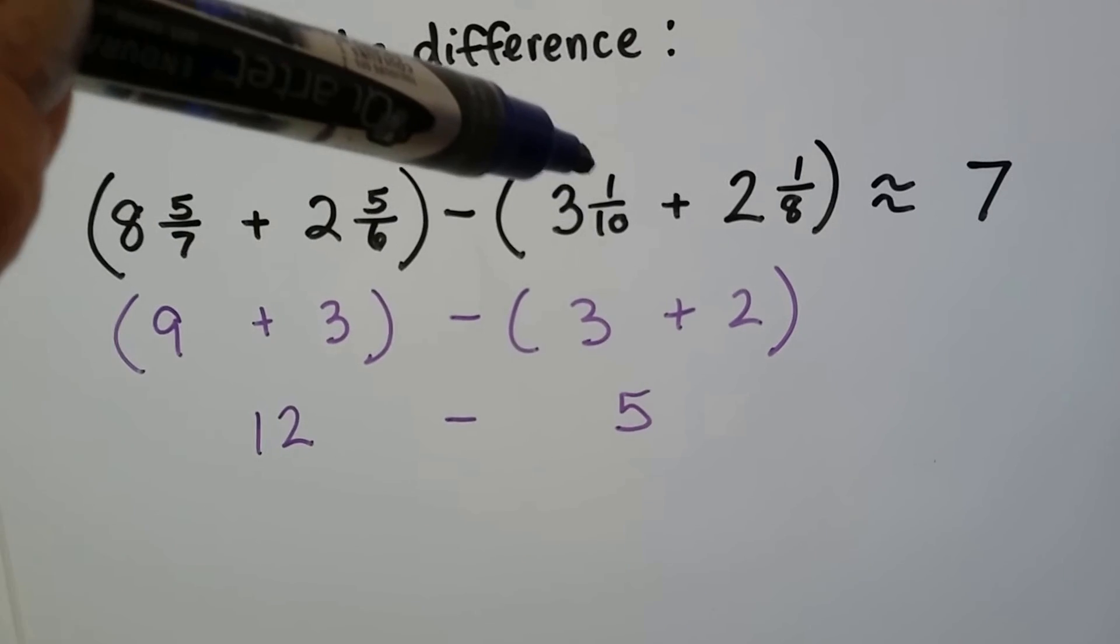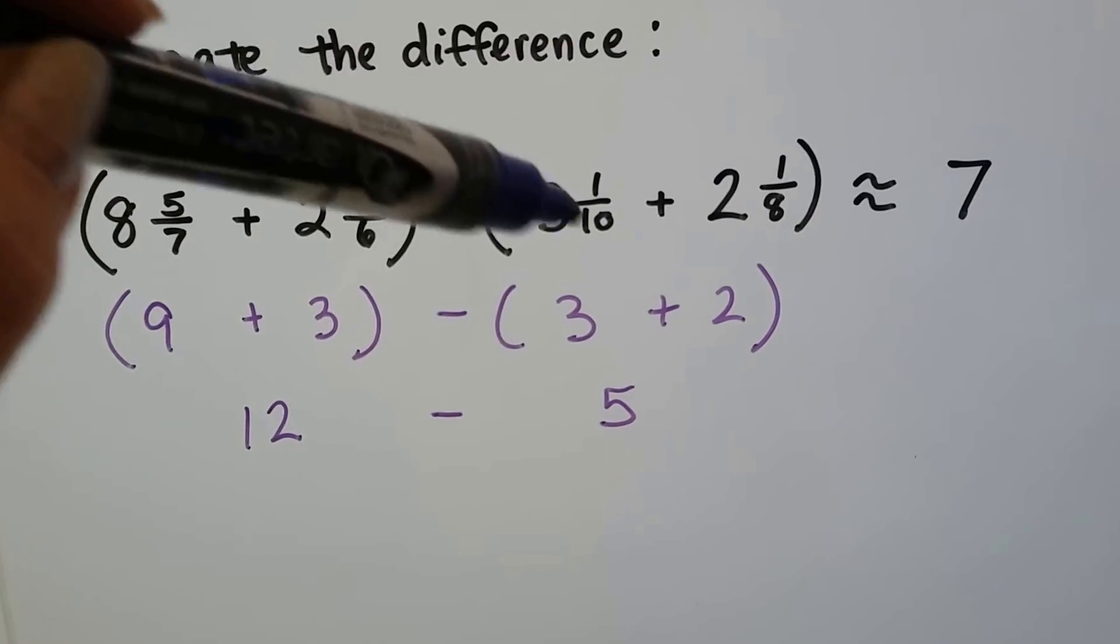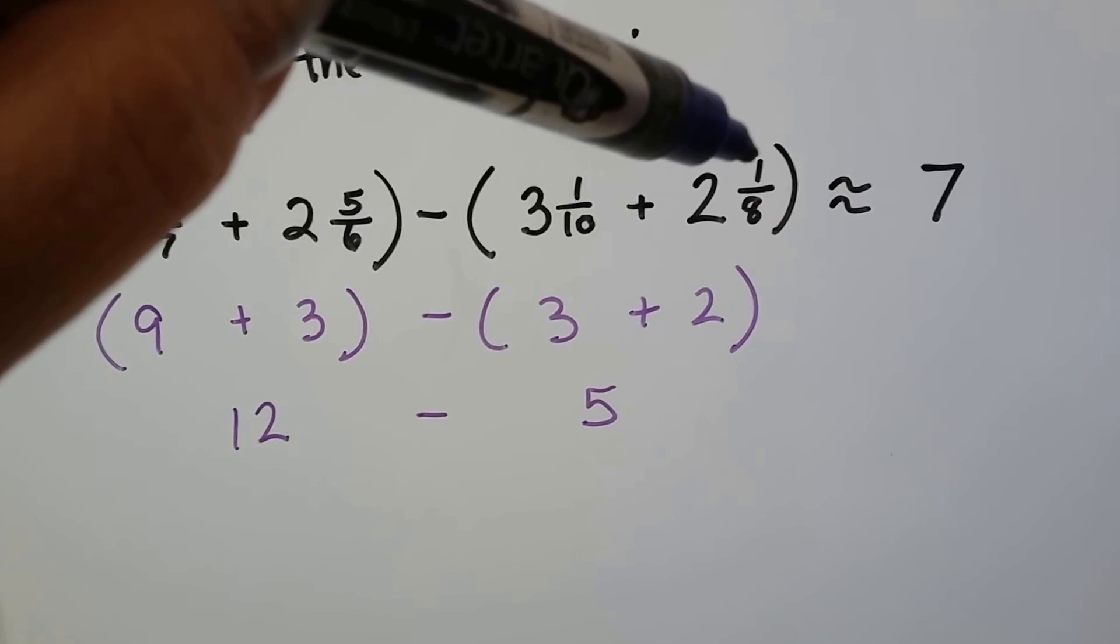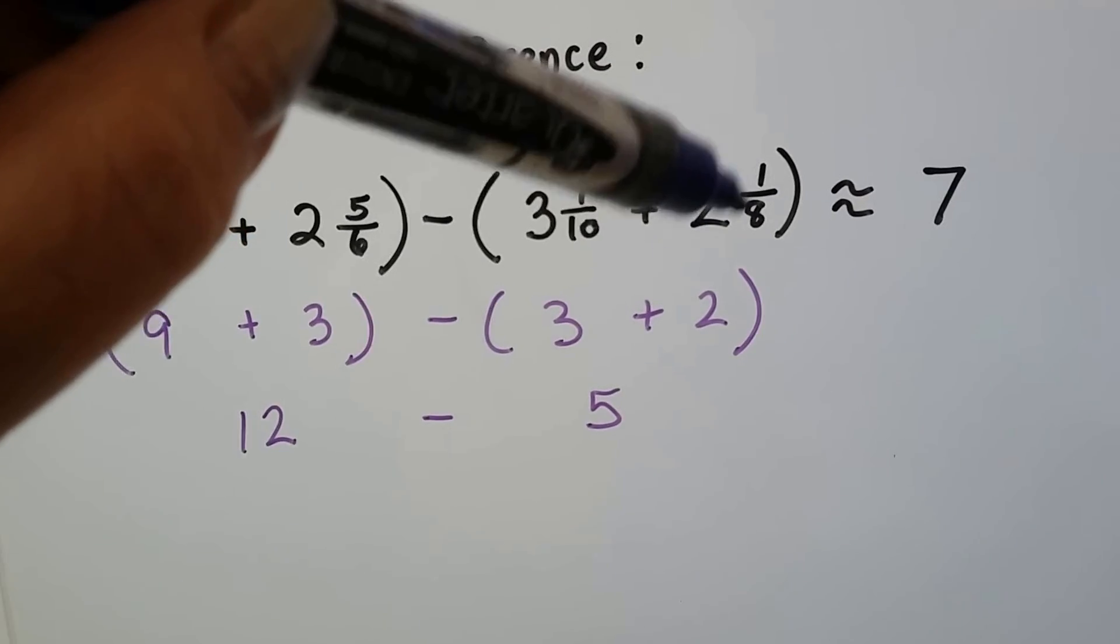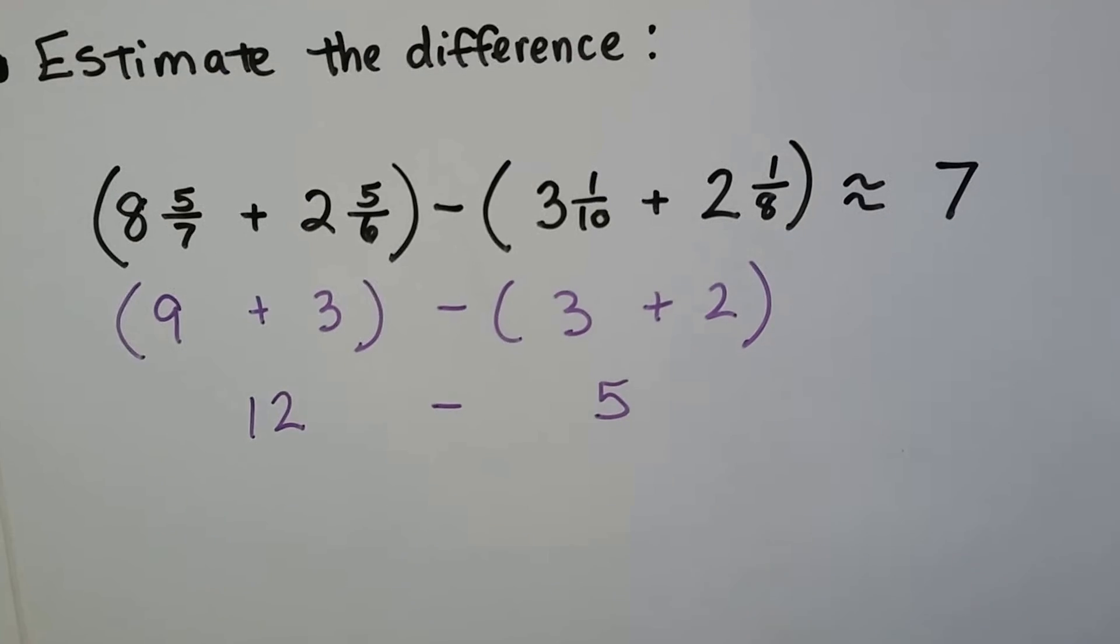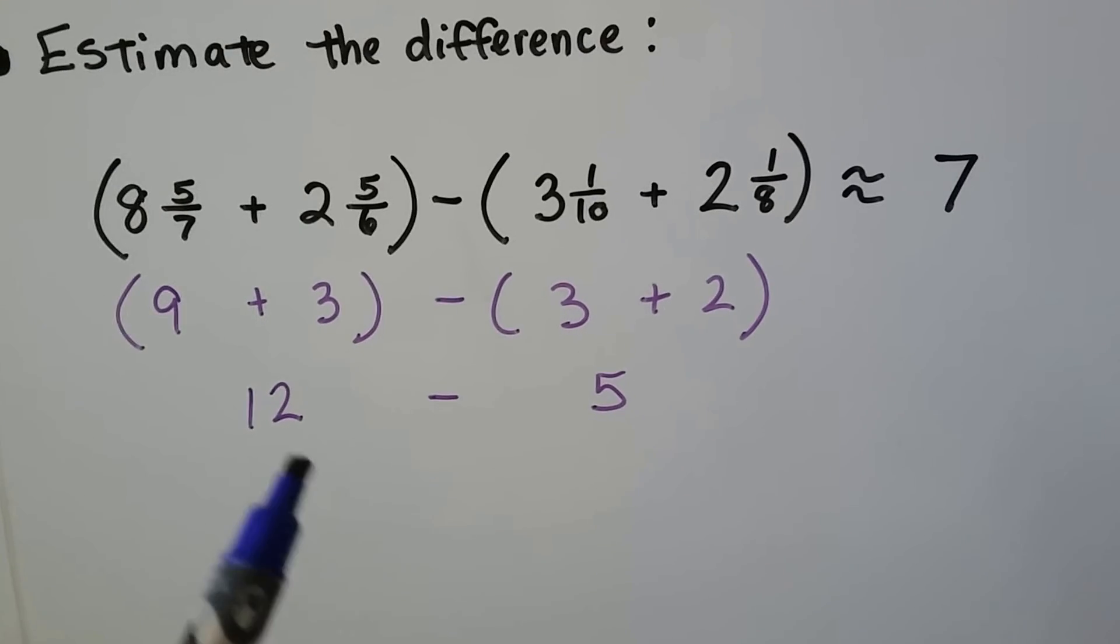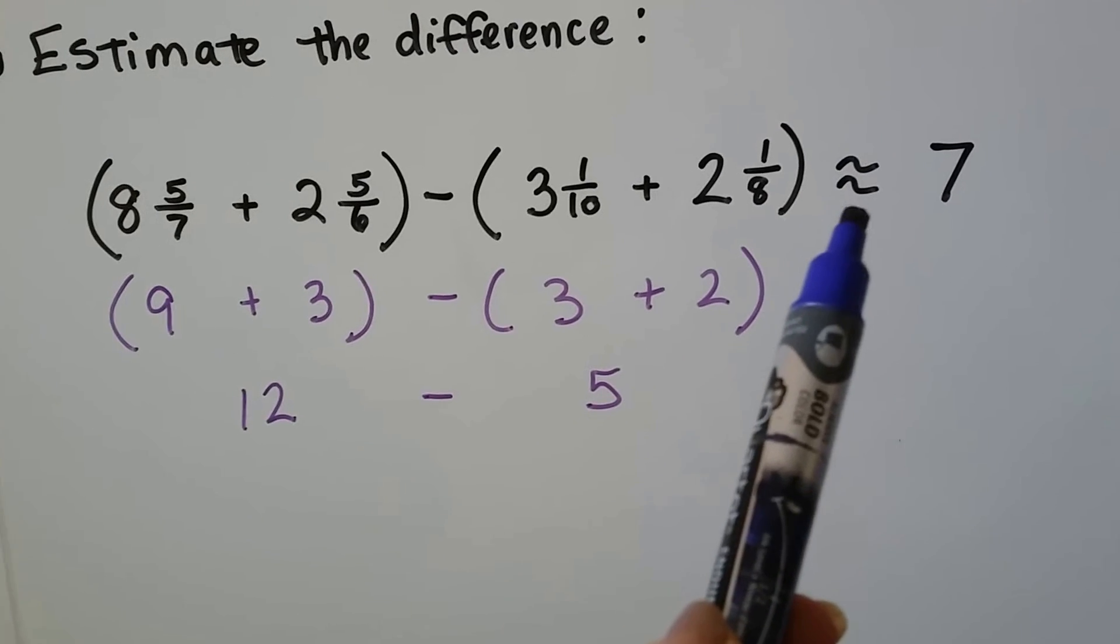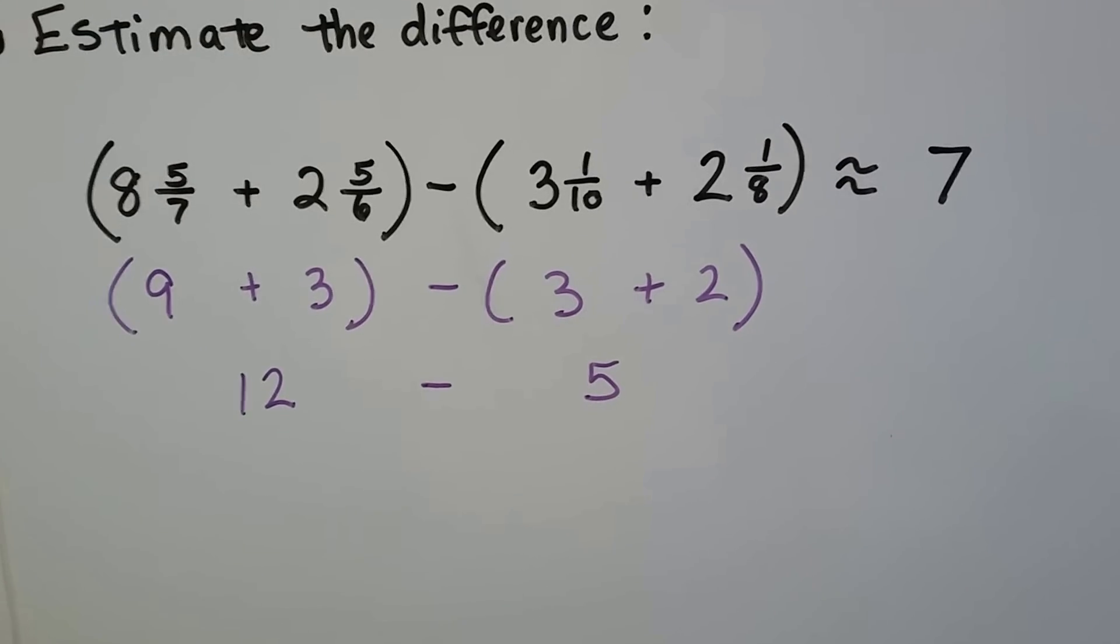On this side, 1 is not more than half of 10, so we round down to 3. And 2 and 1 eighth - the 1 eighth is not more than half of 8, so it rounds down to 2. So on this side we have 3 plus 2, which is 5. We have 12 minus 5, so the answer is approximately 7.